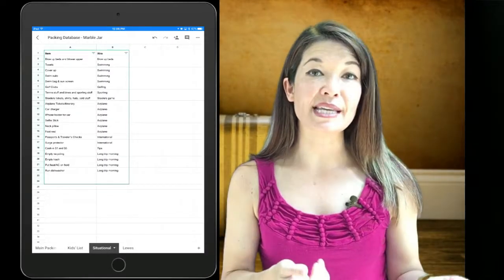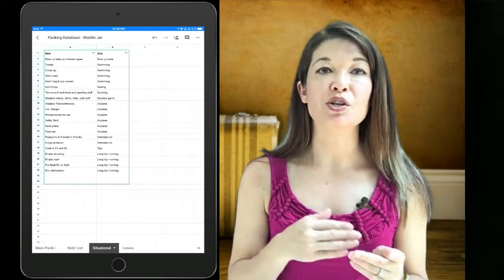Situational. So you'll notice that my packing list does not cover every situation. There are obviously different items required when we go to the beach or we travel internationally, for example. For those trips that happen more routinely, I have situational lists that I can cut and paste onto my packing list. These are also organized in that same spreadsheet in Google Sheets under a separate tab.